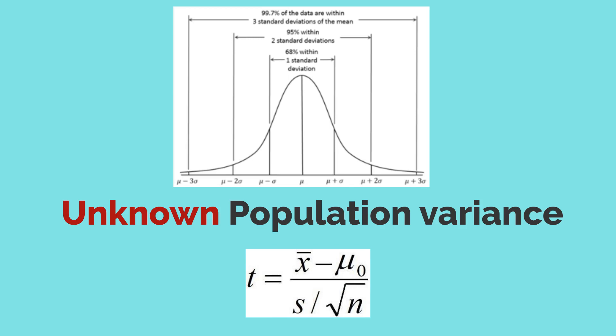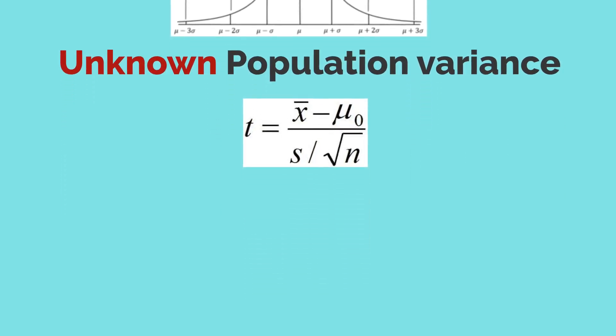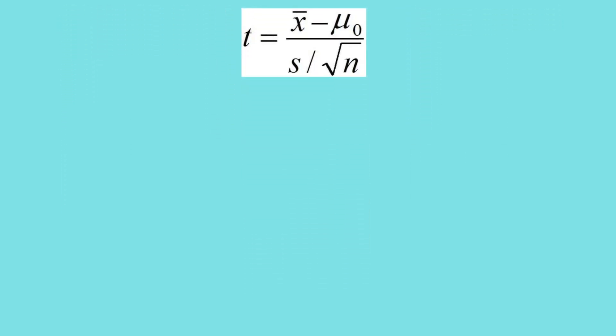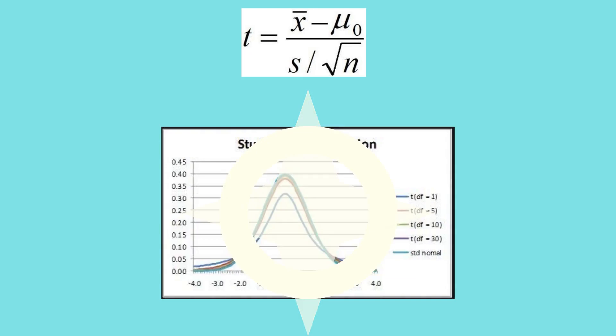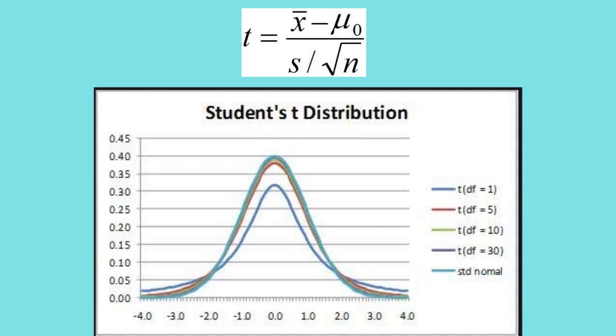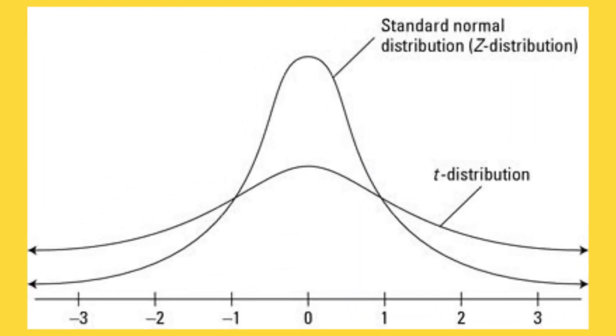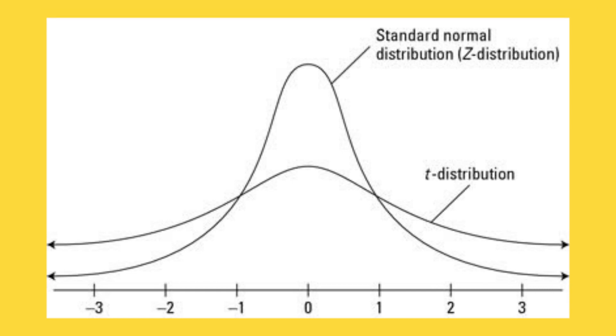In a vast majority of such problems, the preferred choice of test statistic is the t-test. A t-test is a hypothesis test using a statistic that follows a t-distribution. The t-distribution is a probability distribution defined by a single parameter known as degrees of freedom. Each value of degrees of freedom defines one distribution in the family of distributions, and the t-distribution is closely related to the standard normal distribution.